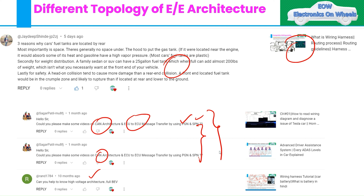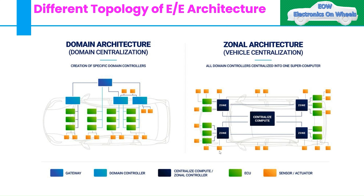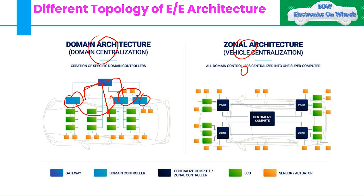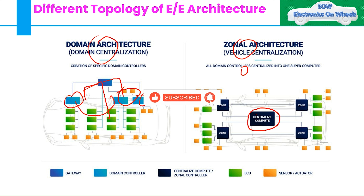Mainly two architectures exist: one is domain architecture and the other is zonal architecture. Domain architecture is very specific to domain controllers — you can see here these are the domain controllers, and we have one gateway connected to pass communication to other domains. In zonal architecture, all the domain controllers are centralized into one supercomputer.